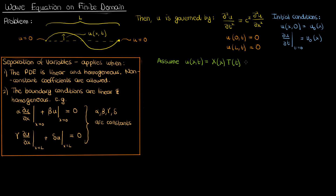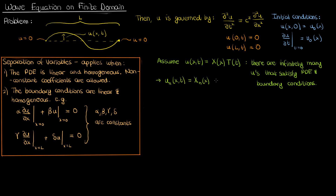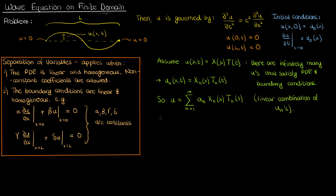However this separable solution isn't exactly unique because there are infinitely many of these solutions that satisfy the PDE and the boundary conditions, so we could simply write each of these individual solutions using a subscript n as an index. Now because our PDE and boundary conditions are linear, we can say that any linear combination of these individual solutions would also be a valid solution. So the most general possible solution is the sum from n equals 1 to infinity of a_n times X_n times T_n, where the a_n's are just coefficients.